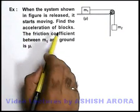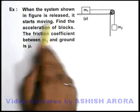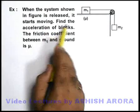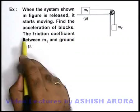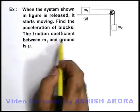In this example, when the system shown in figure is released, it starts moving. We are required to find the acceleration of the blocks, and it is also given that the friction coefficient between this block m1 and ground is μ.